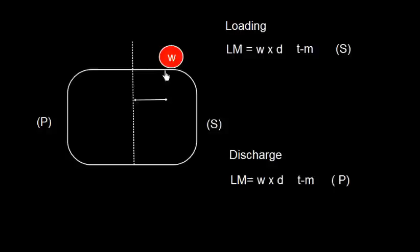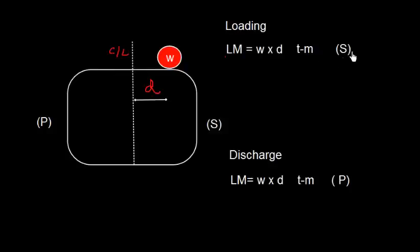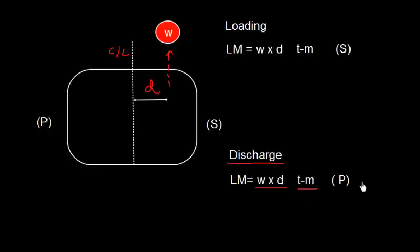Let us consider the list moment. Suppose a weight W is loaded at a horizontal distance D from the center line on the starboard side. The list moment is W into D ton-meters to starboard. Similarly, if I discharge a weight from starboard, the list moment will be W into D ton-meters to the port side, because discharging from starboard creates a port list.